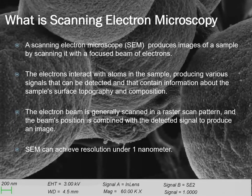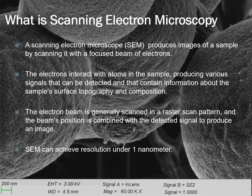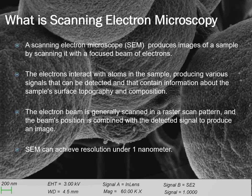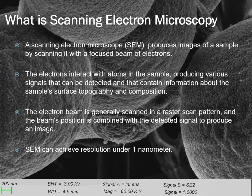A scanning electron microscope produces images of samples by scanning with a focused beam of electrons. The electrons interact with atoms in the sample, producing various signals that contain information about the sample surface topography and composition. The electron beam is scanned in a raster scan pattern, and the beam's position is combined with the detected signal to produce an image. SEM can achieve resolution under 1 nm.